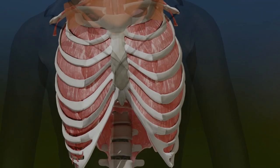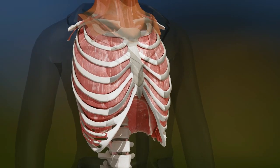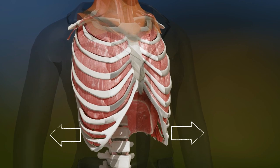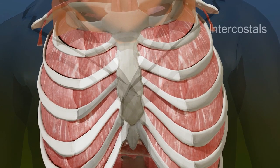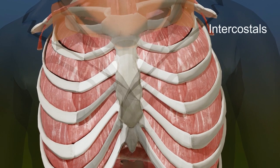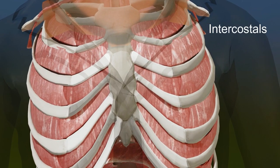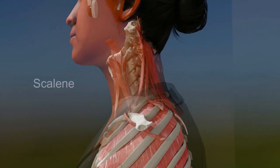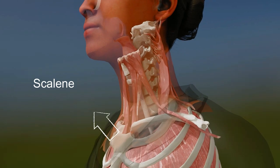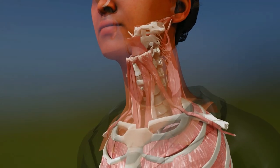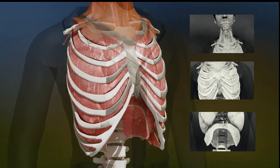It also pushes our abdomen, belly out, which you can feel if you have a tight waistband, and moves the lower ribs out a little. The muscles between our ribs, the intercostal muscles, pull the ribcage up and out, increasing the width of our chest. And finally, the scalene muscles pull the sternum or breastbone up and forward, increasing the depth of our chest. These three movements increase the volume of our chest.